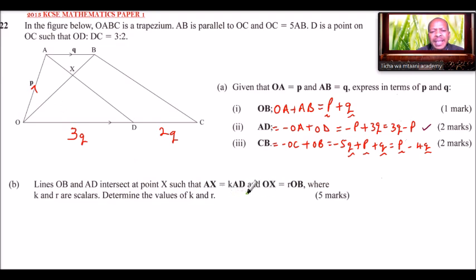We are told AX equals KAD. So we can put our K here and this is 1 minus K. That is to say AX is a fraction of AD. If we say, for example, K is one-third, then this will be 1 minus that, which is two-thirds. That's just an example. Then we have OX equals ROB, so OX equals R. And here we have 1 minus R. With that information, the trick here is to express vector OX in two ways. We can express OX as a fraction of OB, that is in terms of R, and we can also use OA and AX.